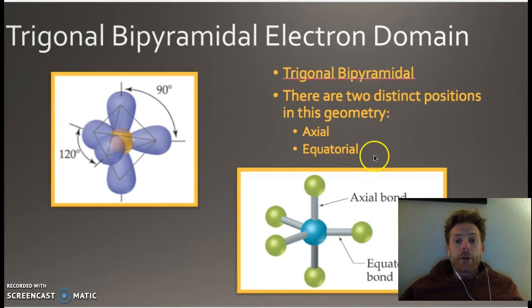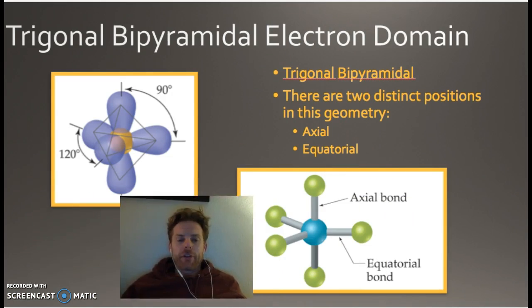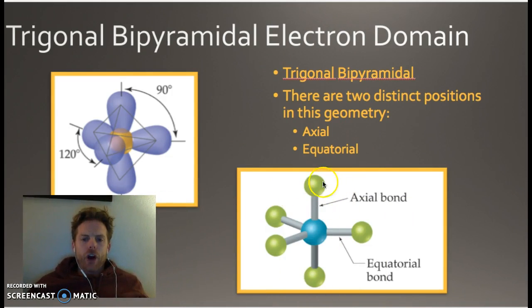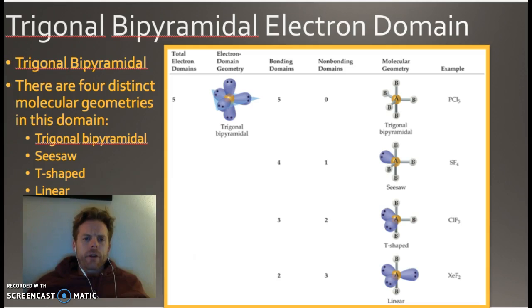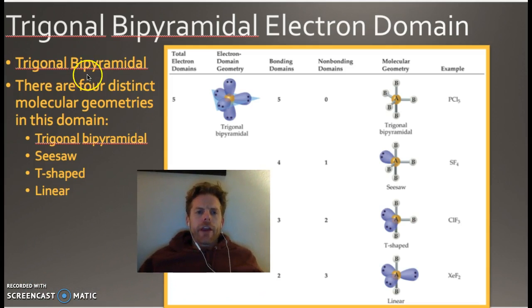Now, for trigonal bipyramidal, we have two things. And I referenced these earlier, but let's talk about it. This is the axial bonds. Remember, kind of like the earth. They're like the north and the south pole, the axial. And these are equatorial bonds around the center. And this is going to be important because I'm going to be naming some of these things. So, here we go. In the trigonal bipyramidal, we have lots of different options. Oh my gosh, there's so many. It's going to be fine. You're going to love it.